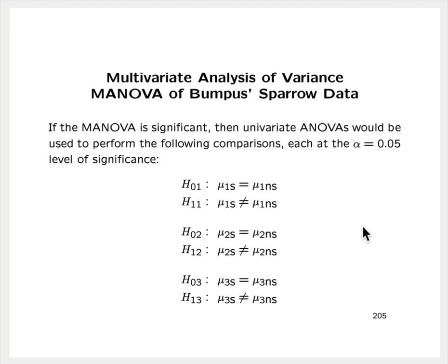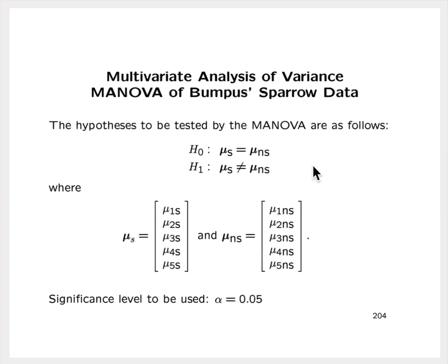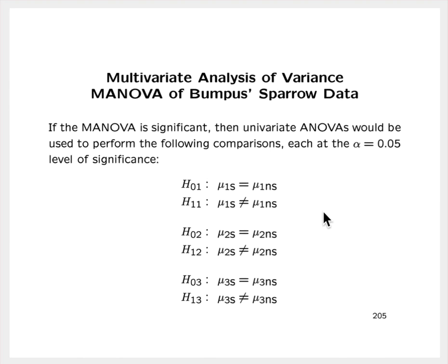If the MANOVA is significant, univariate ANOVAs will be used to perform the following comparisons, each performed at the 5% significance level. For each of the response variables individually, we would perform a univariate analysis of variance to compare the means of that response variable across the two groups. The hypotheses for the univariate ANOVAs cover all five response variables.